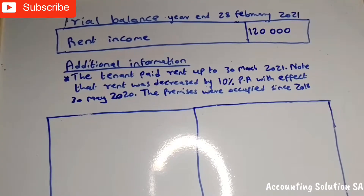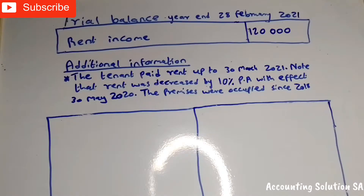Hi guys, hi Grade 12. I decided to do a Part 2 for rental income, which is a rental decrease by a percentage. This is how you should work the transition of rental income which is going to come with a percentage decrease. Let's start — our trial balance is for the year end 28 February 2021.